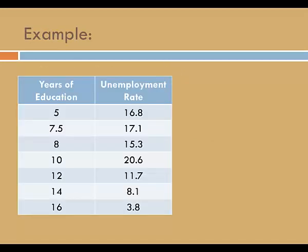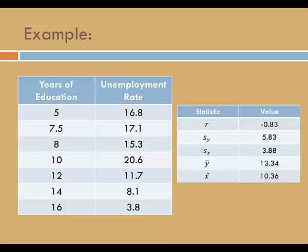Let's look at an example. Here's a small dataset with years of education as an explanatory variable, and unemployment rate as a response variable. We'll start by calculating a few statistics. Here I have the correlation coefficient, the two standard deviations, and the two means.